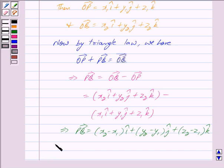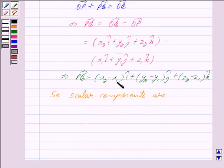So the scalar components are x2 minus x1, y2 minus y1, and z2 minus z1.